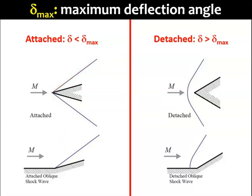If the deflection angle of the inclined surface is bigger than delta max, then the supersonic flow won't be able to deflect through an oblique shock that is attached to the surface. In this case, the shock will be detached from the surface with some gap in between the shock and the leading edge of the surface.